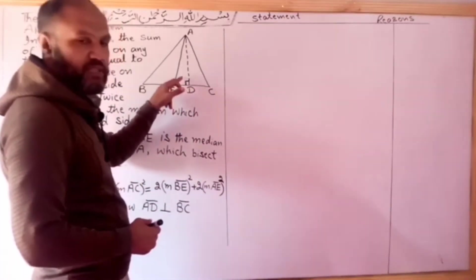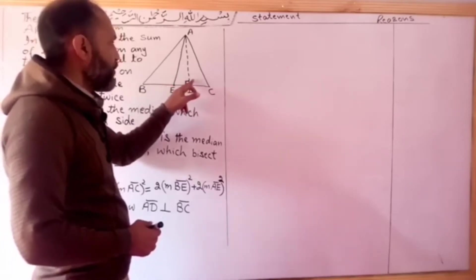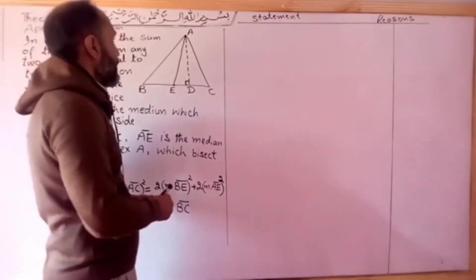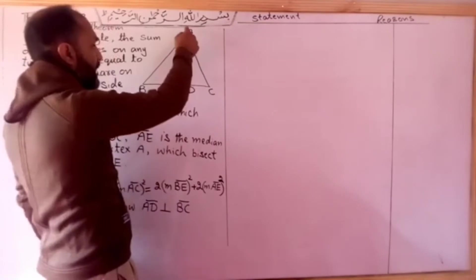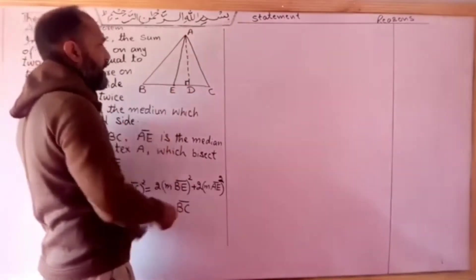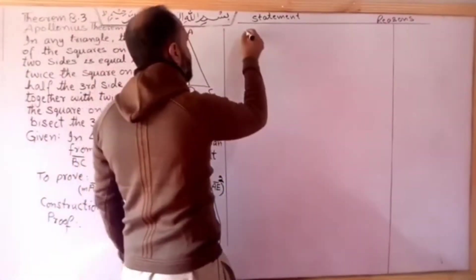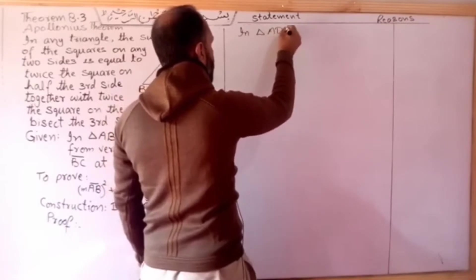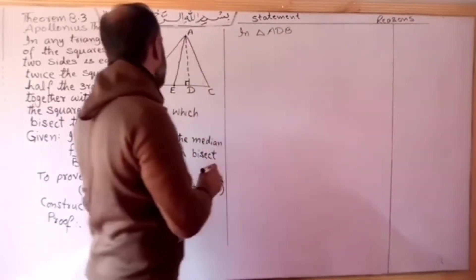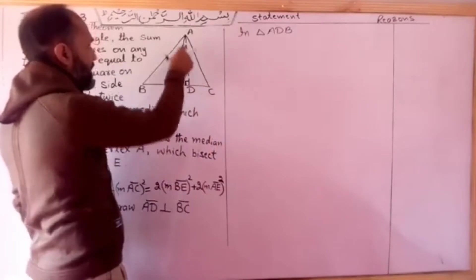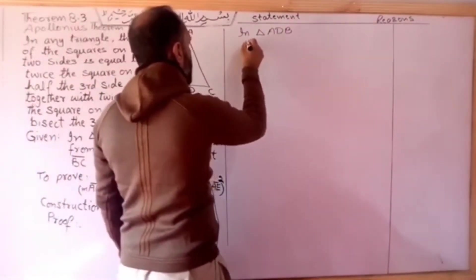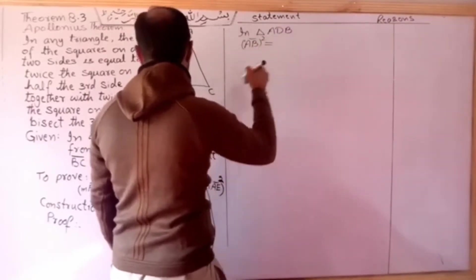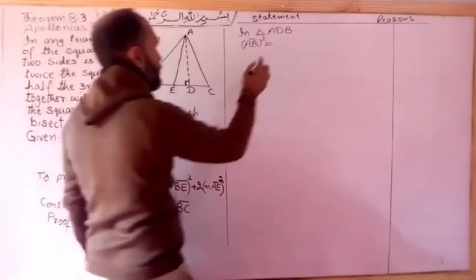Now we must remember the construction. Draw a perpendicular AD at 90 degrees. By the Pythagoras theorem applied to triangle ADB, which is a right triangle with hypotenuse AB.